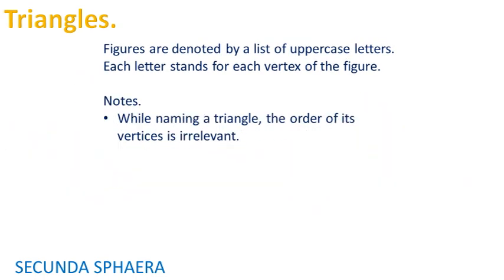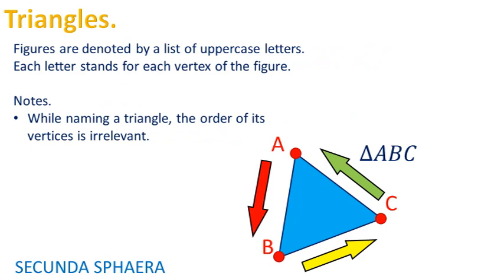While naming a triangle, the order of its vertices is irrelevant. That is because by any way three points are listed, every pair of points within the three points get joined by a segment.